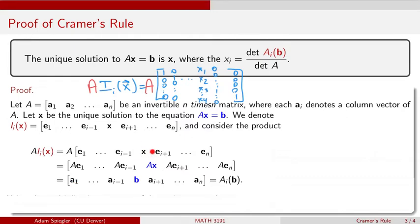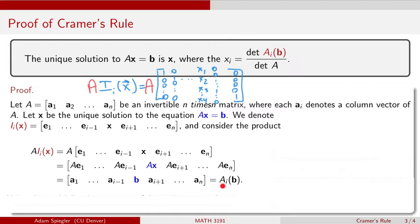There is one exception: we replaced the i-th column of the identity matrix with X. So in this product, the i-th column is A times X. And our assumption was that X is the vector that solves this equation, so A times X equals B. Therefore, when I take the product of A times the identity matrix whose i-th column is replaced with X, I get matrix A back except its i-th column is replaced with column vector B.